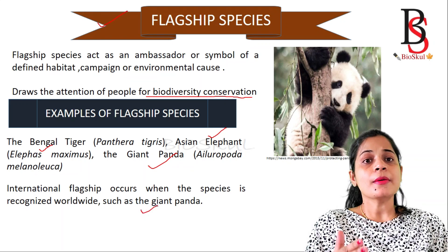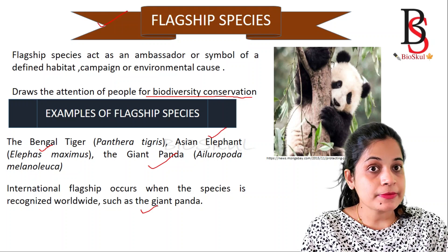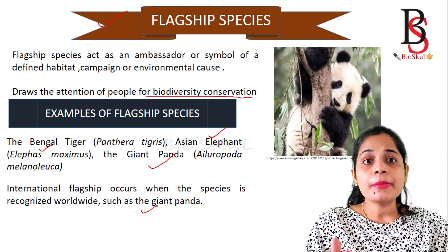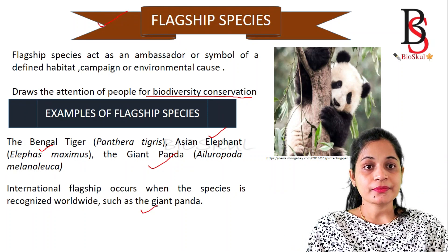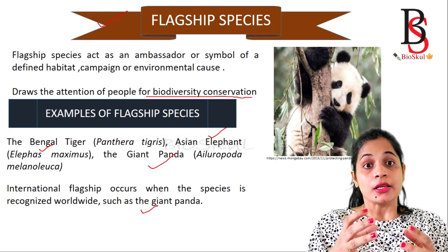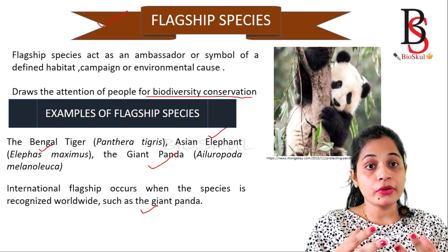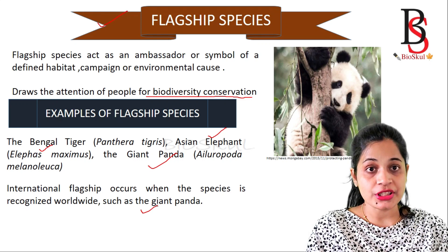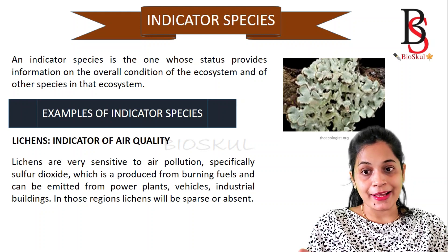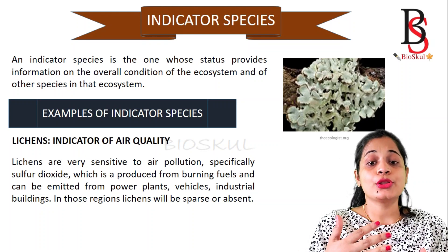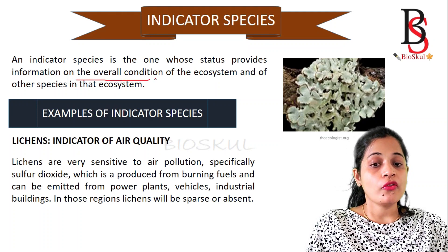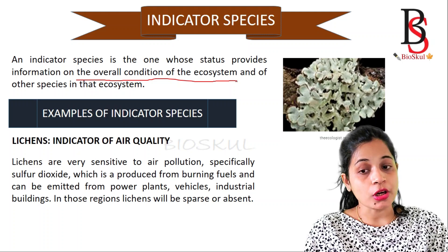Some flagship species are ecological flagship species for protection of a particular biodiversity, and others may be regional flagship species. Basically, flagship species are those species that attract the attention of people to protect biodiversity. The next one is indicator species.